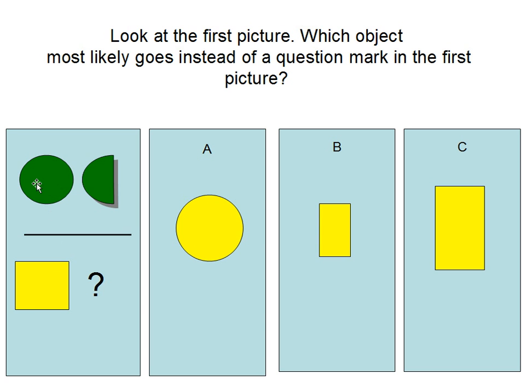The first picture shows a circle and a half of a circle. So the answer is B because there's a square on the first picture and if you cut half of it off it will be the rectangle which is in B.